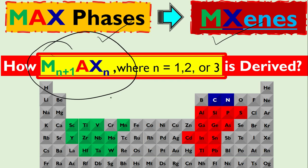The phase may be 211, the phase may be 312, or the phase may be 413. So if you look into this, the A element is basically not changing here. It's the A element in all phases, but only the M and X are changing. Let's first understand what M, A, and X are.